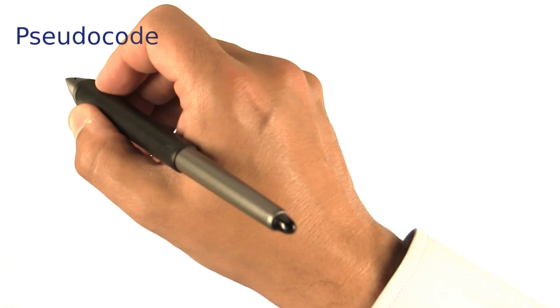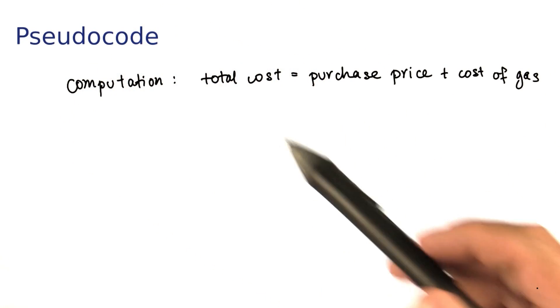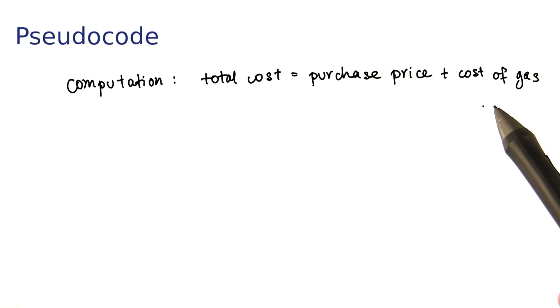In your pseudocode, you may want to write a computation, such as the total cost equals purchase price plus cost of gas.